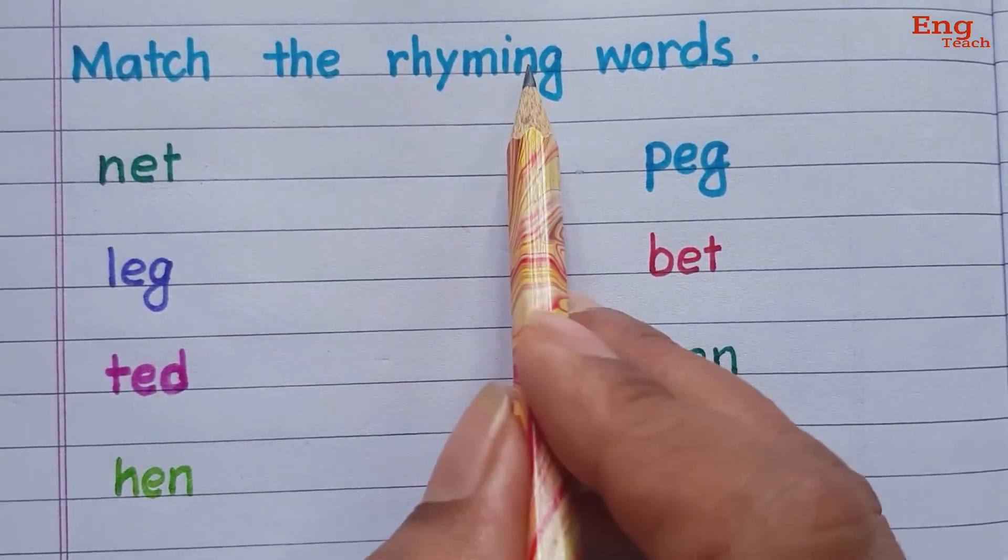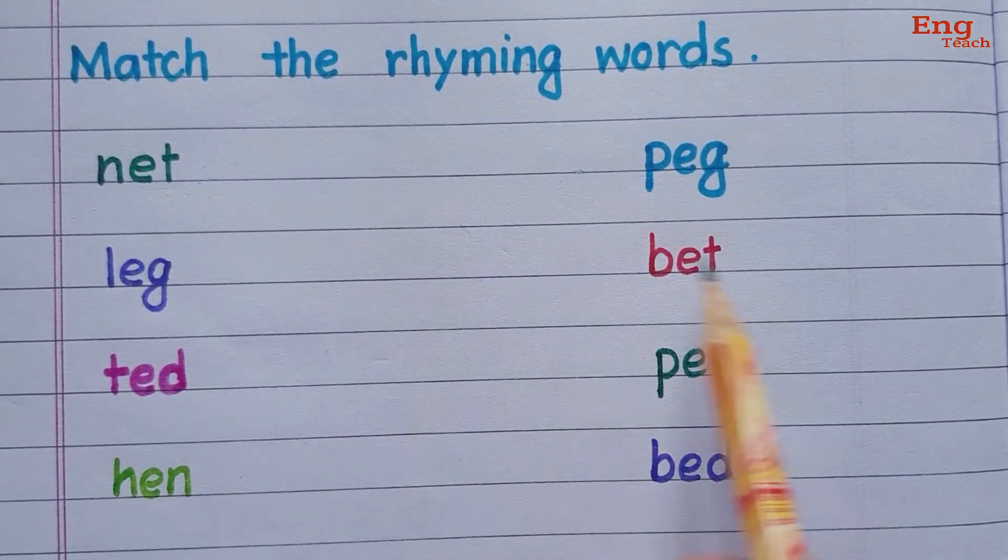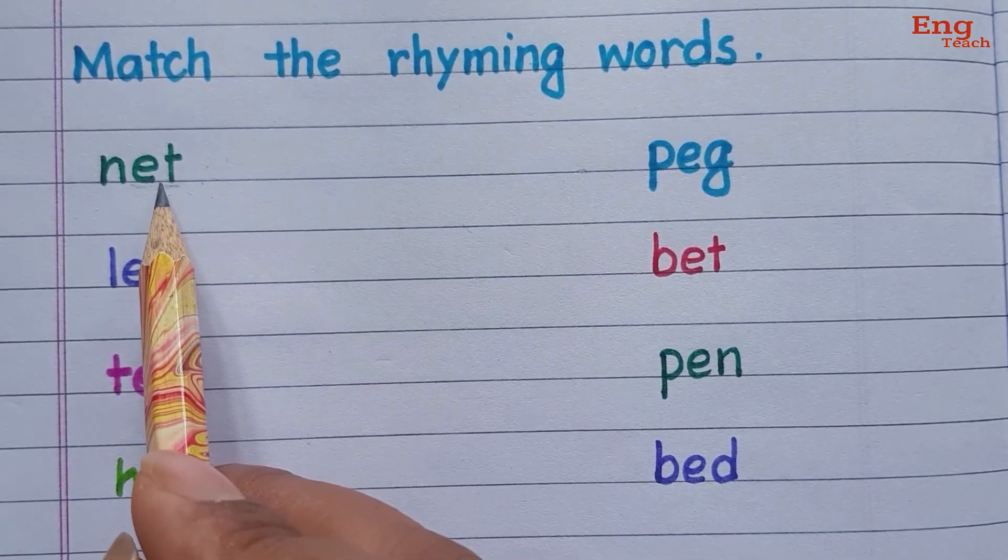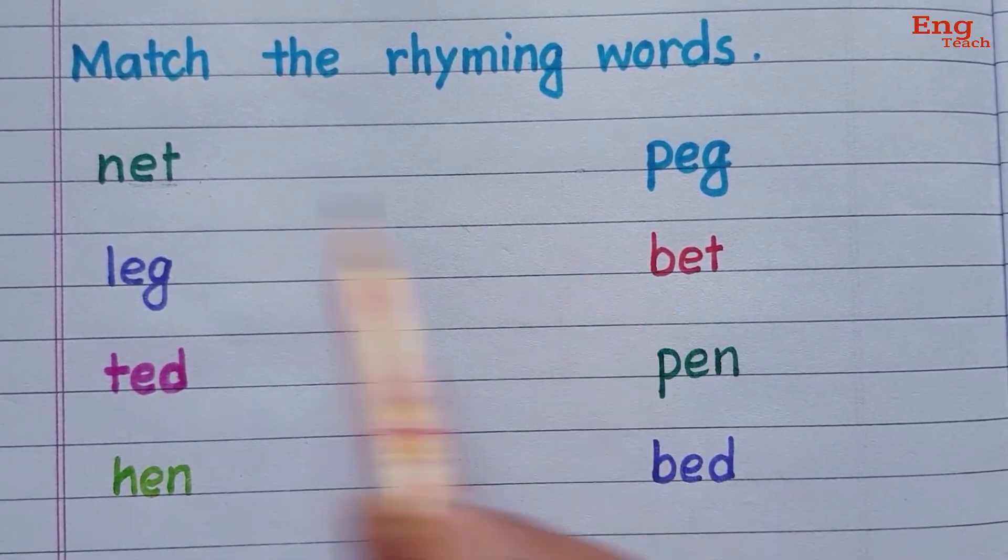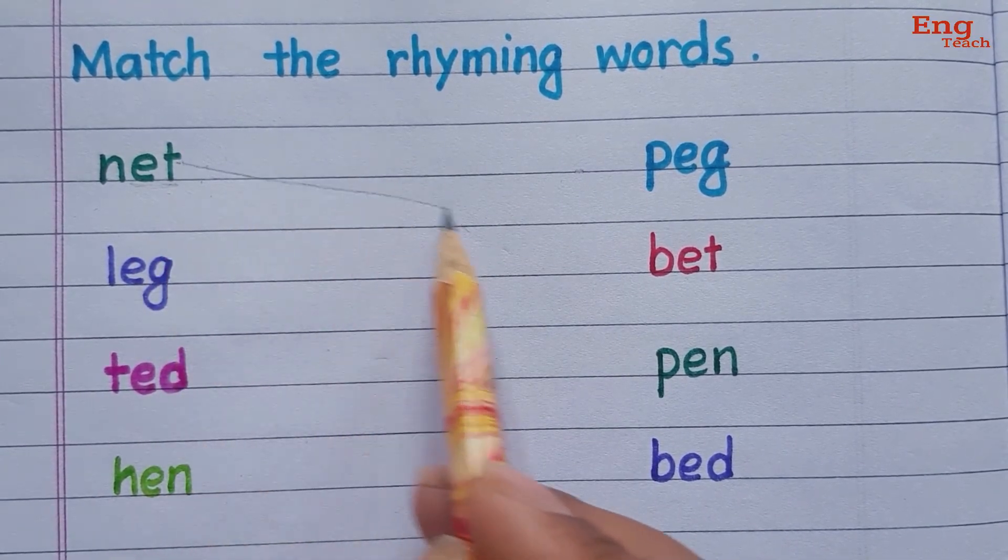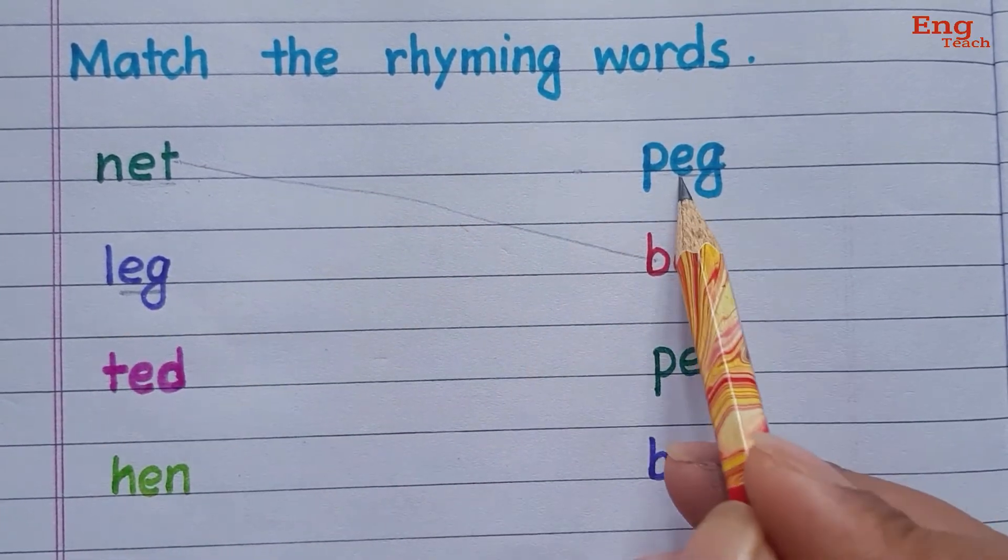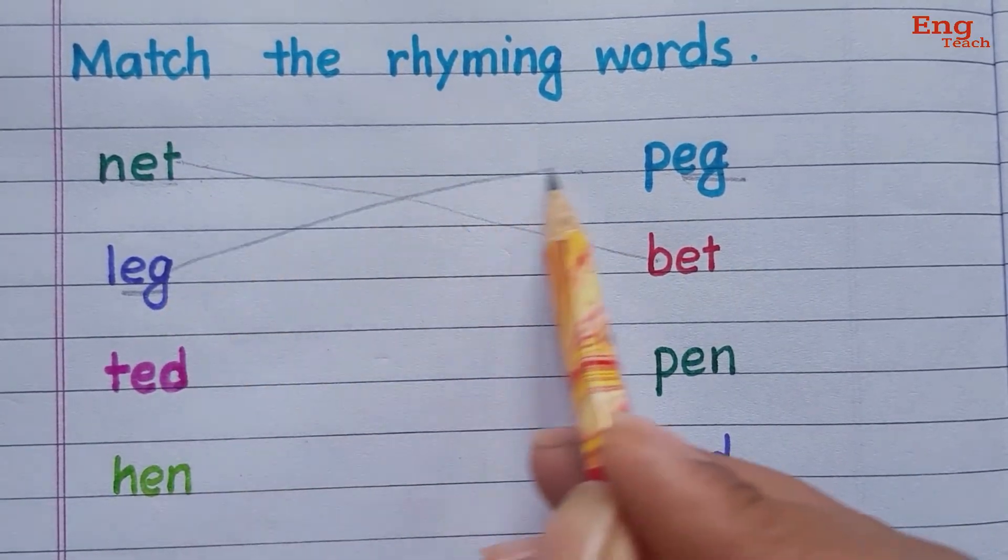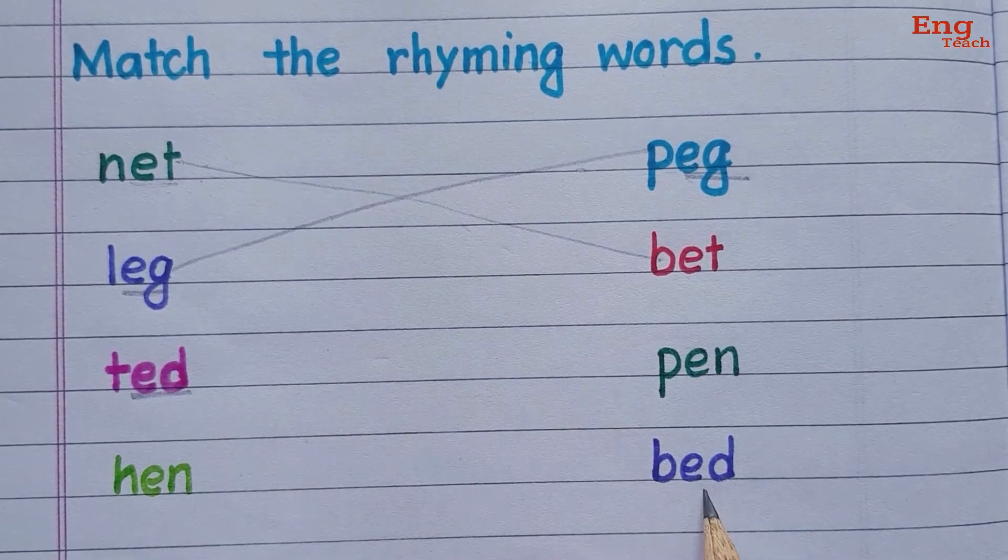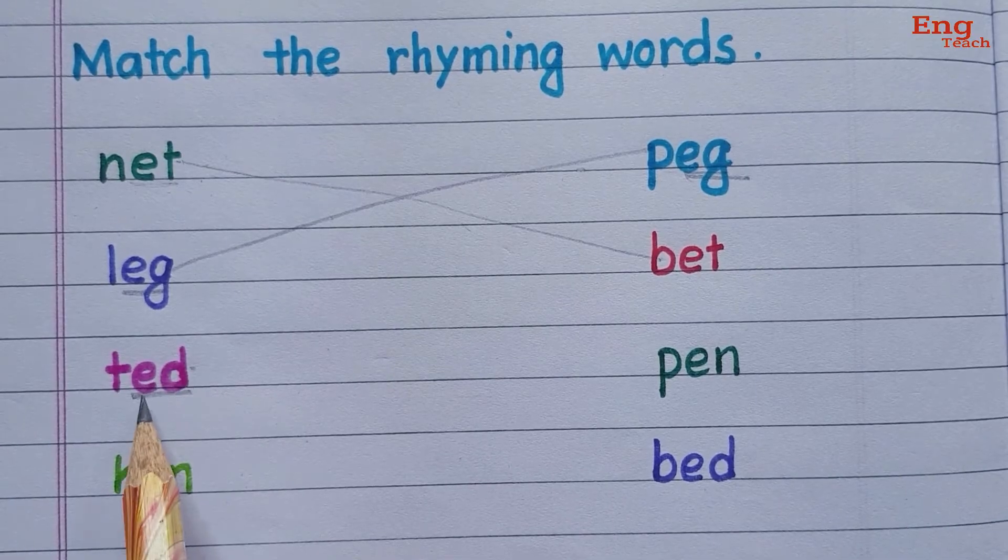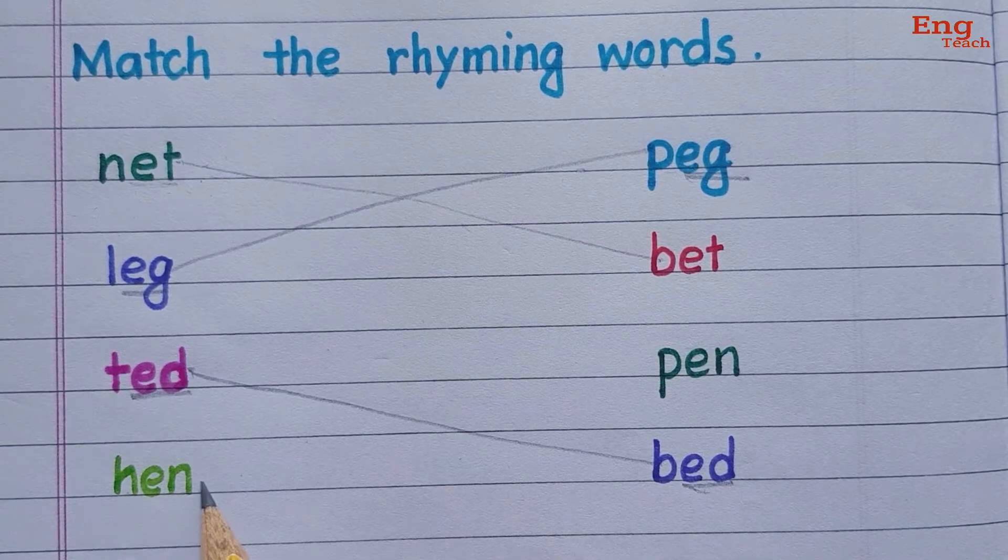Now, match the rhyming words. Rhyming words means ending sound should be same. Net, ending sound, bit, ending sound same. So, net rhymes with bet. Lake rhymes with peek. Ending sound same, eg eg, so it rhymes with tate. Tate rhymes with bet, yes, because the ending sound is same. Bet, hen, pen.